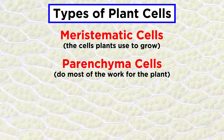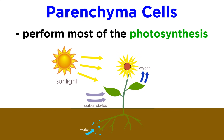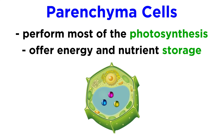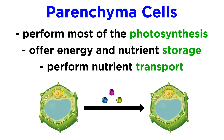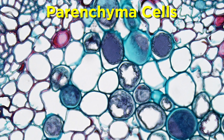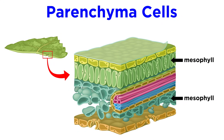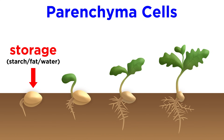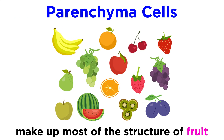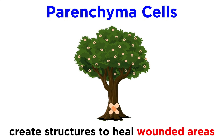The second type of plant cells, parenchyma cells, do most of the work within a plant, being that they're a sort of general use cell. Parenchyma cells are responsible for most of the photosynthesis that occurs, but they also do most of the energy and nutrient storage for the plant, as well as much of the nutrient transport. These cells have thin walls, no specialized structure, and come in a variety of shapes to support their diverse functions. In leaves, parenchyma cells form the two layers of mesophyll where photosynthesis and gas exchange take place. In roots and seeds, parenchyma cells are responsible for storing starch, fat, and water. Parenchyma cells also make up most of the structure of a fruit, and they create new structures to heal areas where a plant has been wounded.